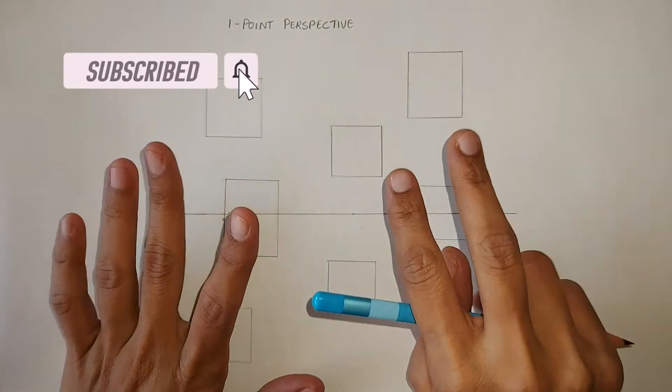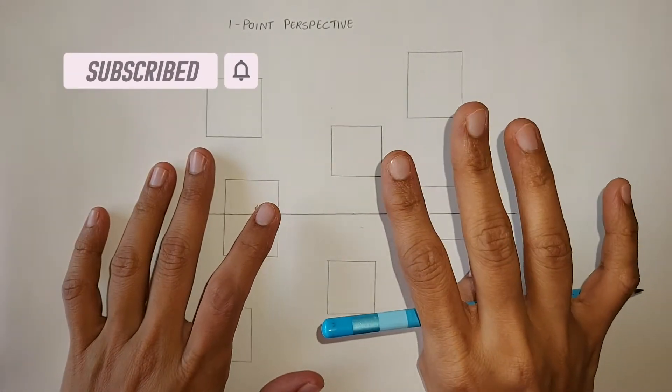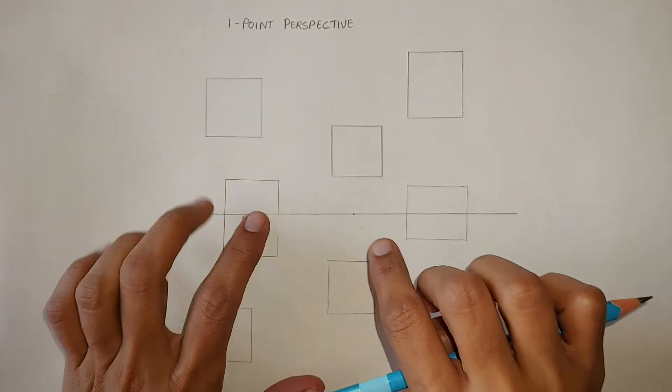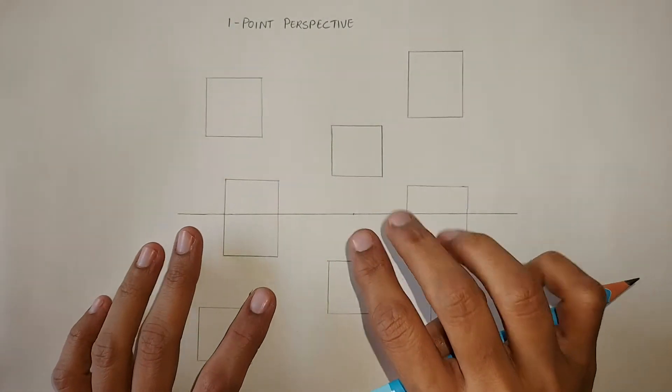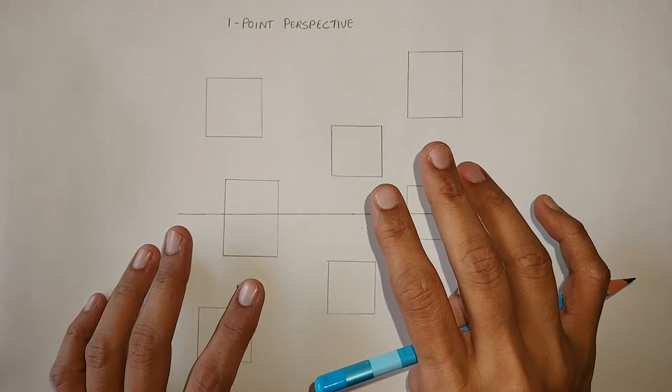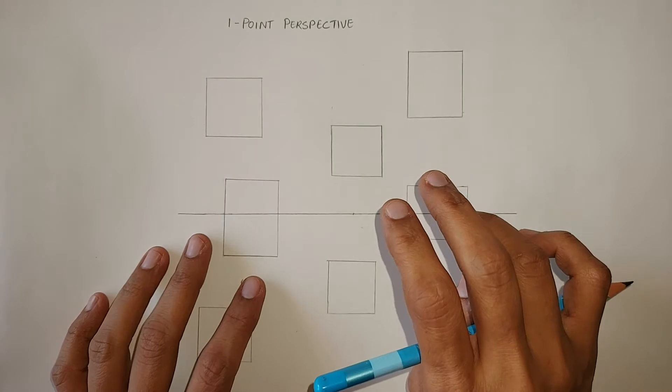Today we will be seeing how to draw objects in different dimensions using a single vanishing point. I have given a brief introduction on perspective drawing and vanishing points in my previous two videos. I have mentioned them in the i button. You may please watch them later.